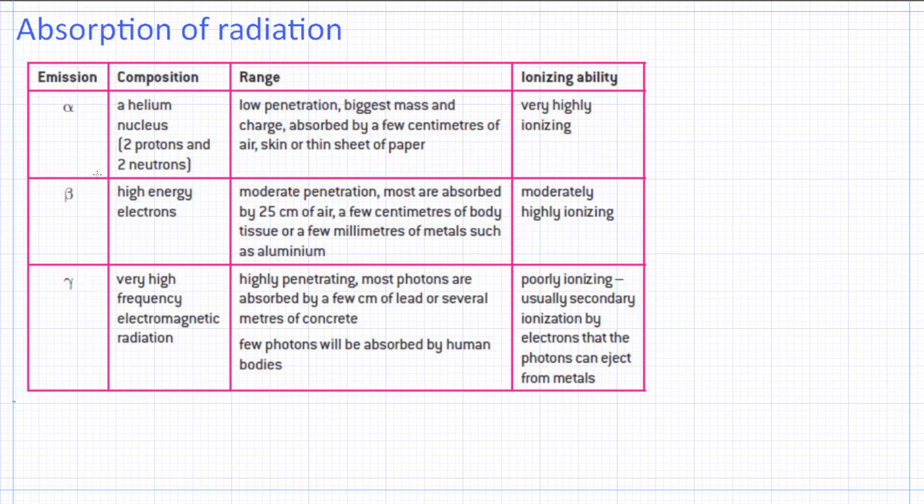Alpha particles ionize gases very strongly. They have a very shortened range in air and are absorbed by thin paper. Why? This is because they are relatively massive - they are the most massive of all.